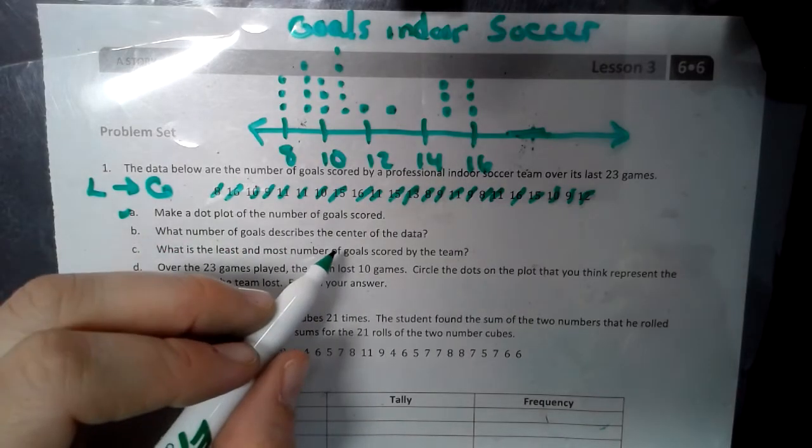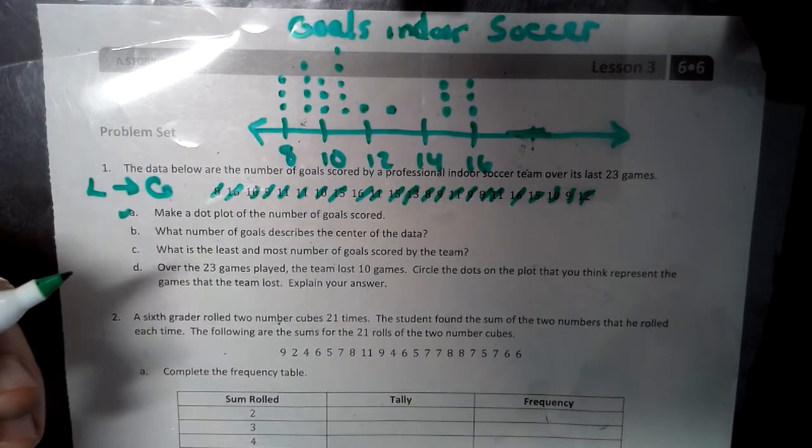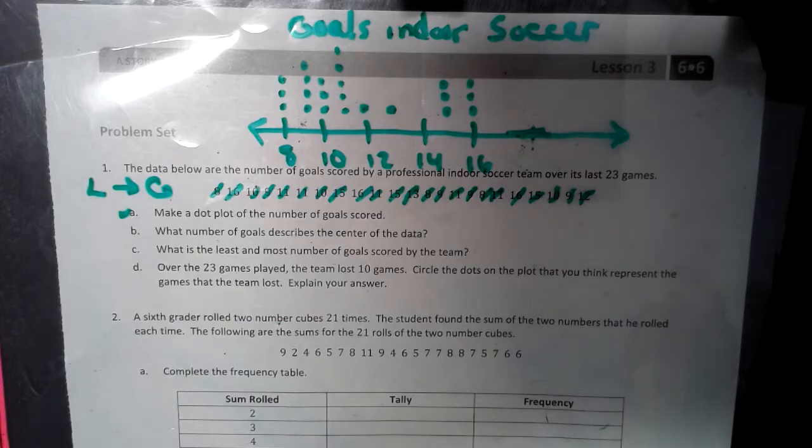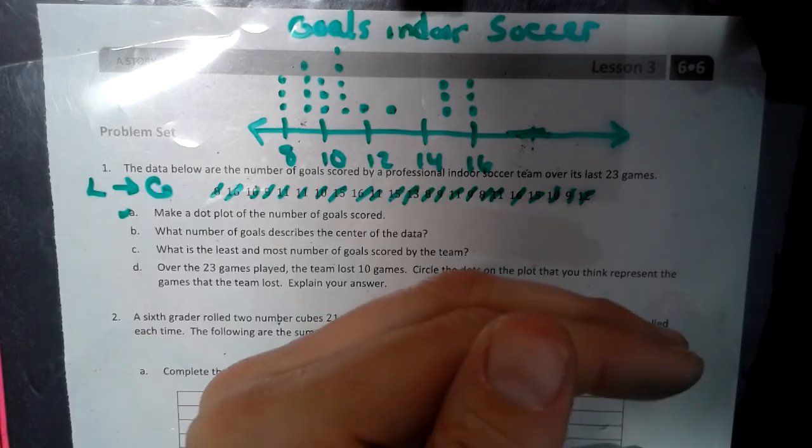Now, what number of goals describes the center of data? So, the center is something that you learned prior to this lesson, which was mean, median, mode, and range. So, median is the middle number. So, we have to find the number that is representing the center of the data.